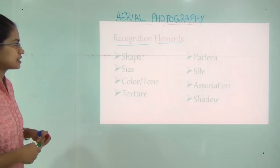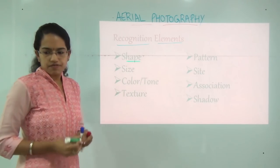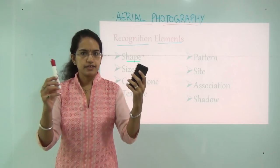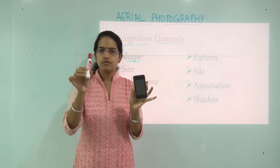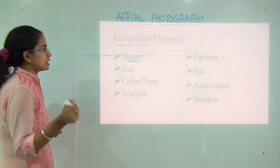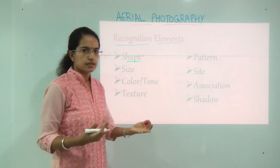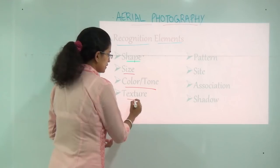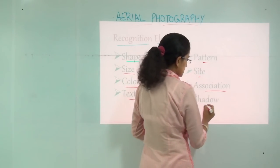These eight recognition elements include shape, size, color or tone, texture, pattern, site, association, and shadows. We will be talking about each one of these one by one.